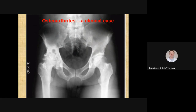If we look at the left side, we will see a more advanced stage of osteoarthritis. We can see the head of the femoral bone and the acetabulum, but we cannot find any gap between the articular surfaces. This means that the cartilage was completely destroyed.